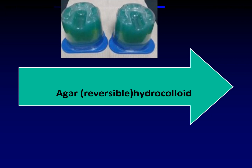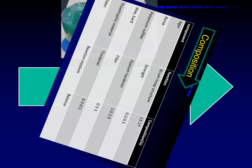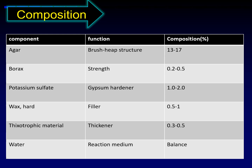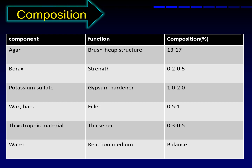which is a reversible hydrocolloid. The composition of agar impression material is agar, which provides brush-like structure to the material. Borax is the strengthening agent. Potassium sulphate is the gypsum hardener. Wax and hard arcs are the filler material. Thixotropic materials provide thickness to the agar material. Water is the reaction medium.